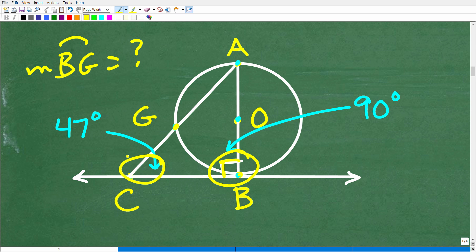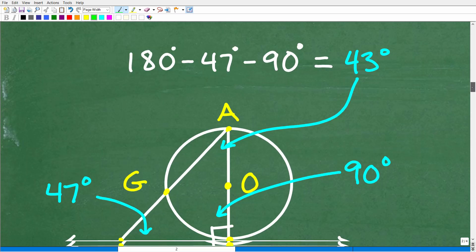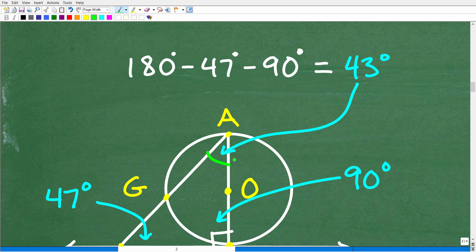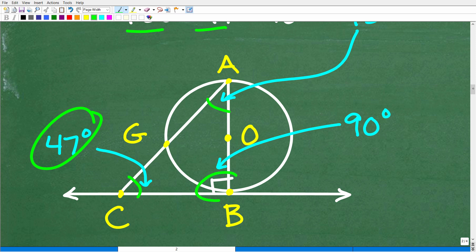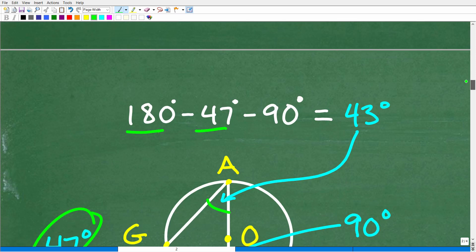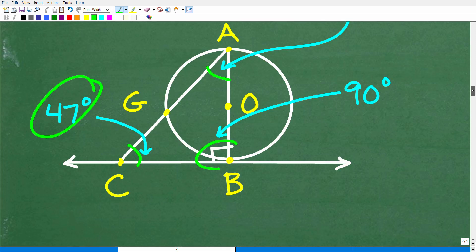We already know that this angle is 47 degrees. Let's start adding some more information here. We can determine this angle of the triangle, angle A, because we know that there's 180 degrees in a triangle. So let's figure out what angle A is. It's going to be 180 minus the 47 degrees. We can add up 47 plus the 90, and then we'll subtract that away from the 180. So this is going to be 180 minus 47 minus 90. We're left with 43 degrees.